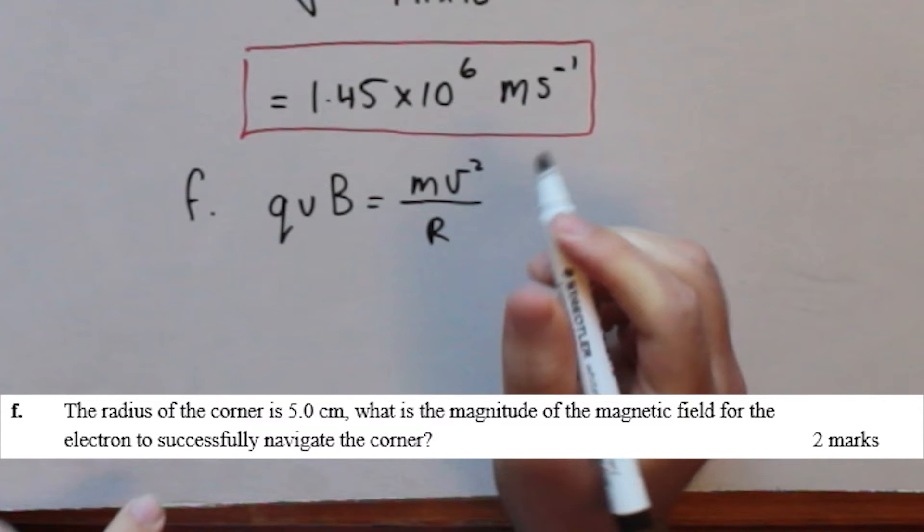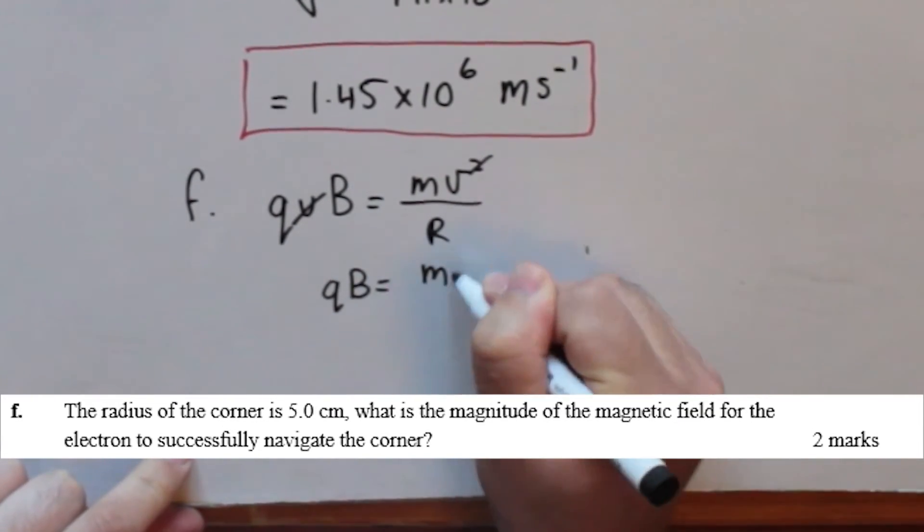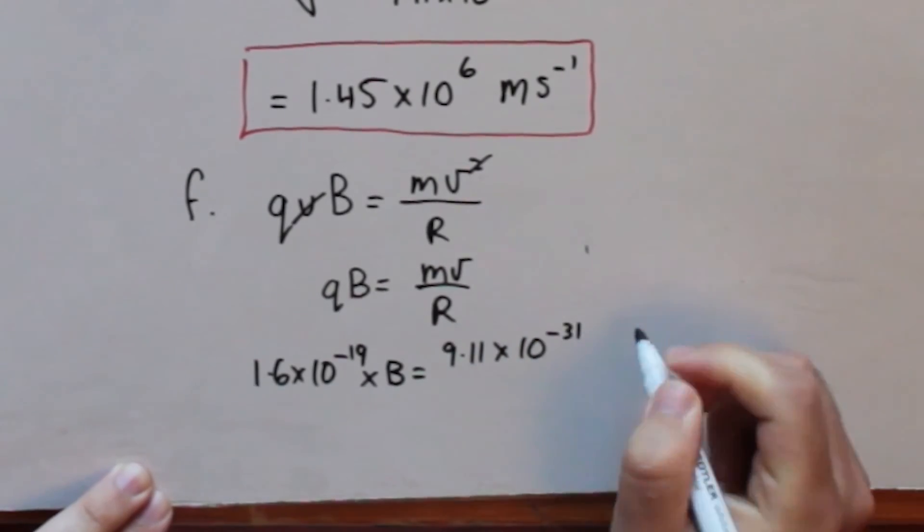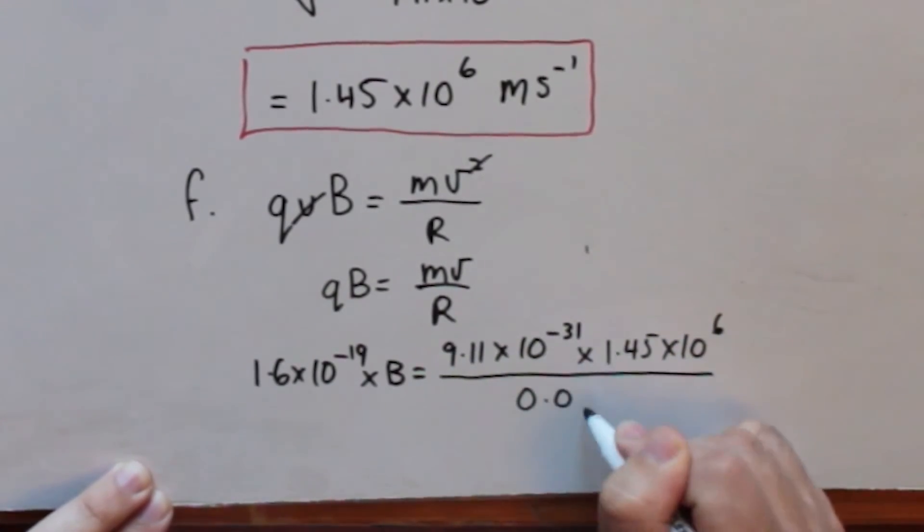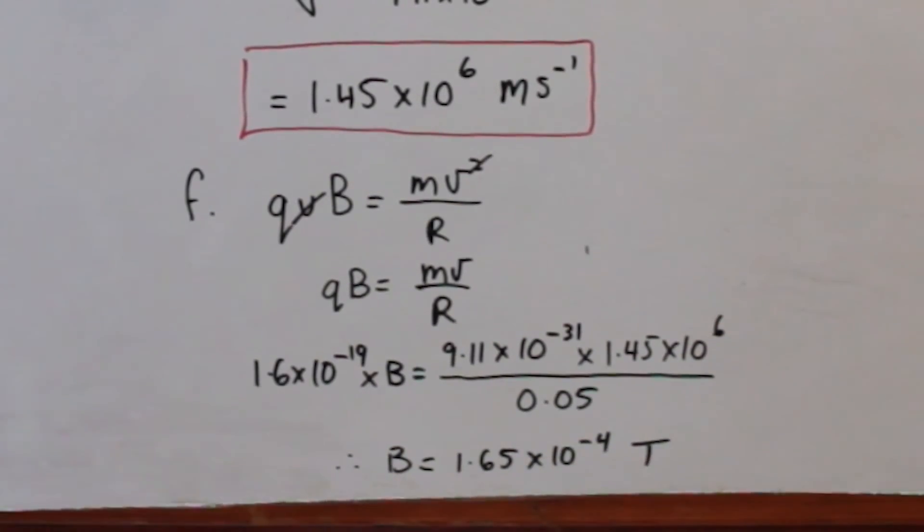To find the magnitude of the magnetic field, we can equate the force on a charged particle, qvB, to the net force on an object travelling in a circle, mv squared over r. So we get 1.6 times 10 to the negative 19 times the field B, equals 9.11 times 10 to the negative 31 times 1.45 times 10 to the 6 divided by 0.05 of a metre. Solving for B gives 1.65 times 10 to the negative 4 Teslas.